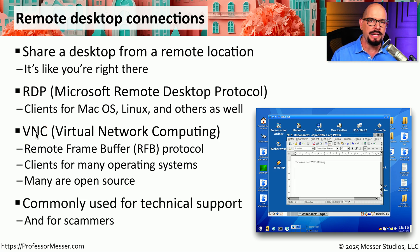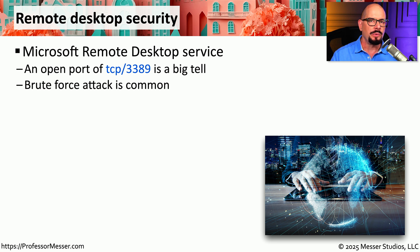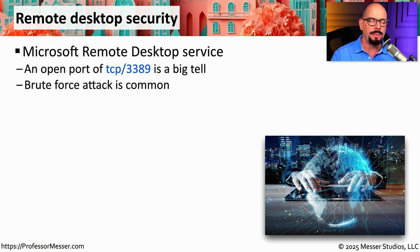Remote desktop enables any organization to support everyone in the field, regardless of where they might be. But scammers love to use remote desktop as well. So if you find that a third party is trying to connect to you using remote desktop, you might want to get a bit more information before allowing a third party access to your computer. One way to tell if someone has a remote desktop service running on their system is to check available open ports. The remote desktop service is waiting for someone to connect to that device to be able to control it.